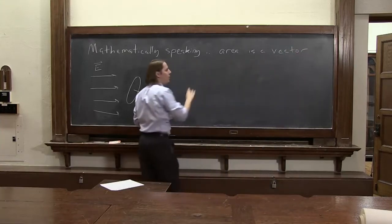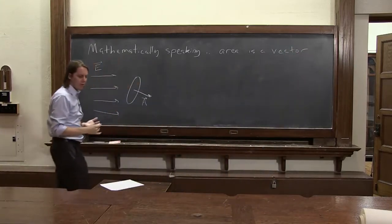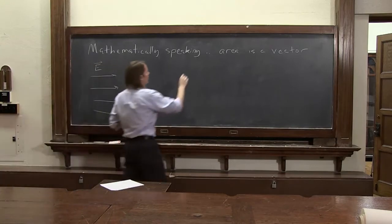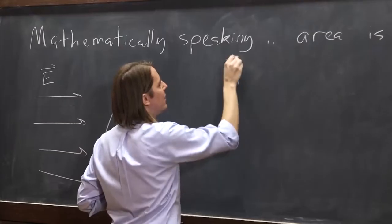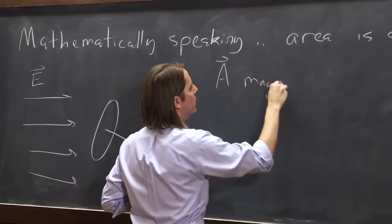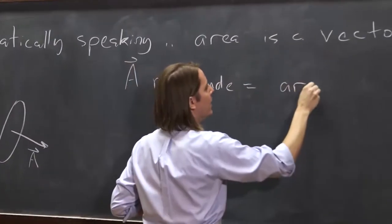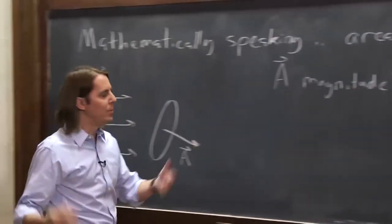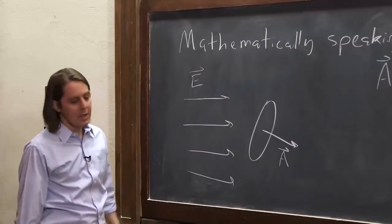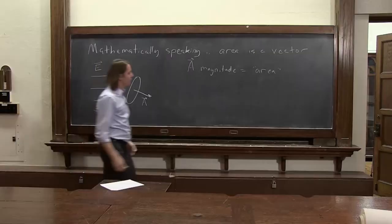So let's be sure we understand how to make an area, which you think of as a scalar, how to make it a vector. So basically, the area vector magnitude equals just the area. If it's one meter squared, then the magnitude of that vector is the area.